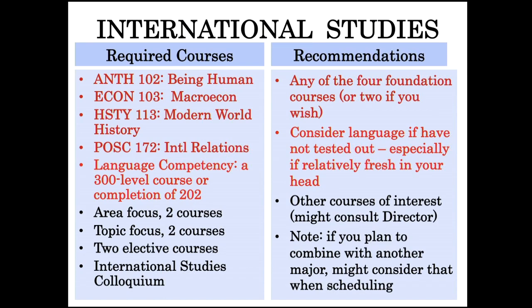The international studies major, like cognitive science, is not focused on a single discipline but involves multiple disciplines and courses across multiple departments. It has four foundational courses providing students with analytical tools to examine global issues: Anthropology 102, Economics 103 (Introduction to Macroeconomics), an introductory modern world history course, and Political Science's Introduction to International Relations. From there, students choose an area of the world to focus on — Africa, Asia, Europe, Latin America, or the Middle East and North Africa.